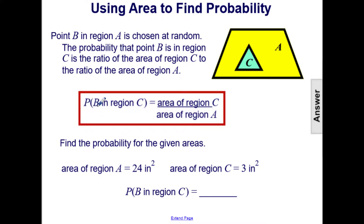The probability of B in region C is equal to the area of region C over the area of region A.